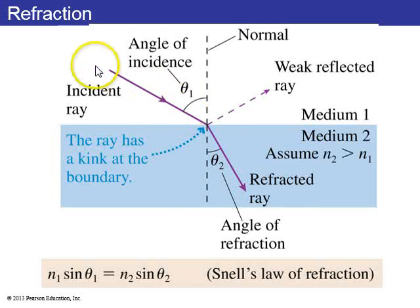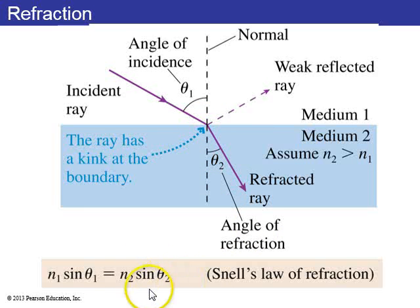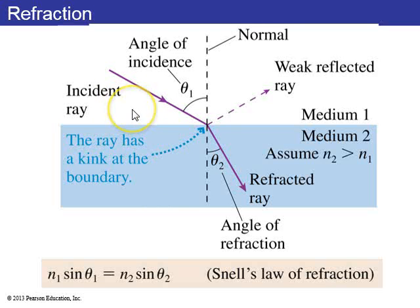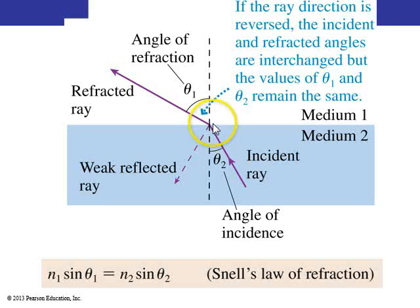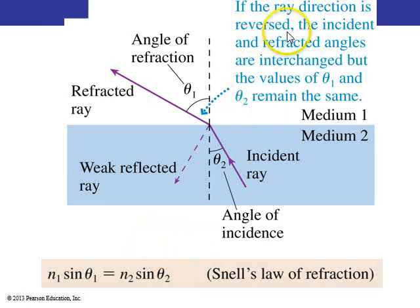When a light ray goes from an external medium where light travels fast down to a slower medium, the ray bends at the boundary. Here is Snell's Law: n1 times sin theta1 equals n2 times sin theta2, where n1 is the index of refraction in medium 1, n2 is the index of refraction in medium 2, theta1 is the angle of incidence, and theta2 is the angle of refraction. If you reverse the ray, you get the same equation — the ray direction is reversed and the incident and refracted angles are interchanged, but the values of theta1 and theta2 remain the same.